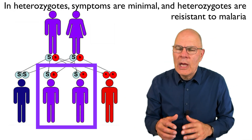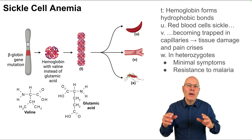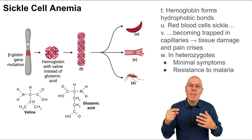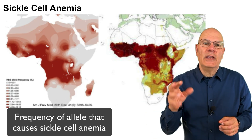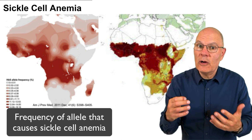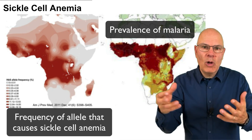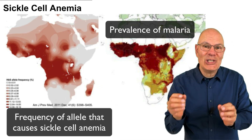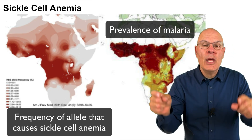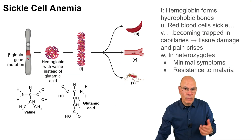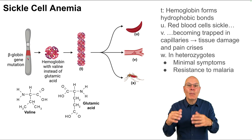In heterozygotes, having one copy of the allele leads to minimal symptoms but resistance to the tropical disease malaria. On account of that, the frequency of the sickle cell allele is extraordinarily high in areas of Central Africa prone to malaria — it's a genetic adaptation we'll revisit when we talk about evolution in unit seven. The main point for now is that one mutation leads to multiple effects. That's pleiotropy.